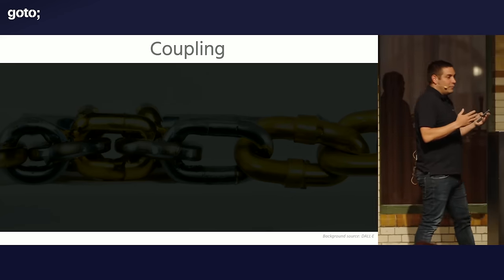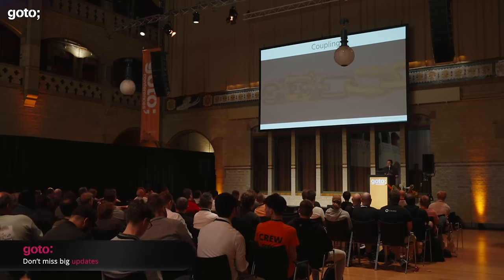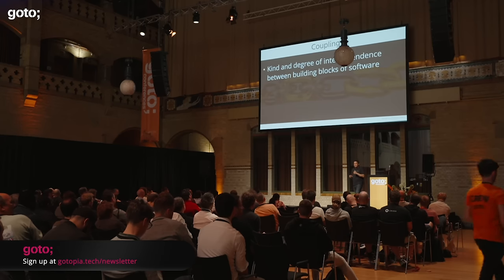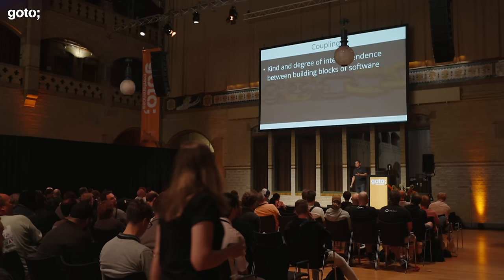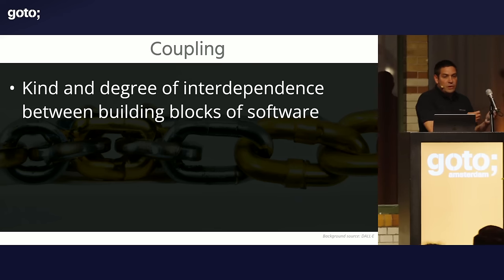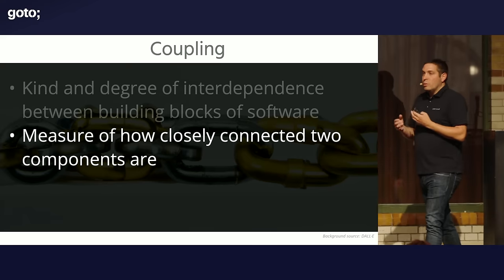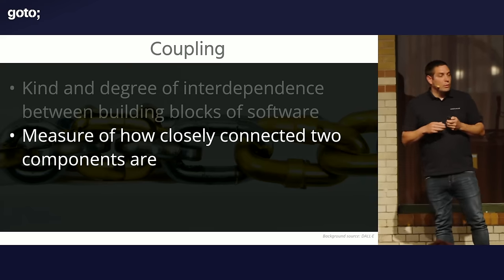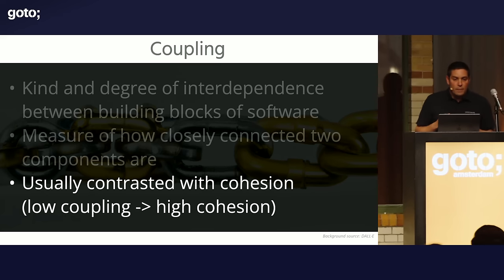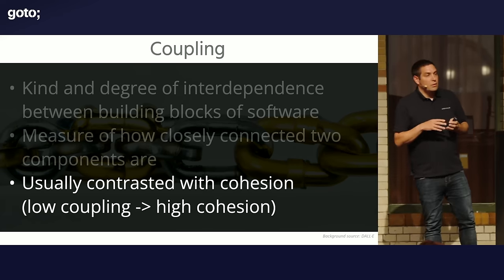Before I can make my points about generic versus specific, we need to look at coupling. Coupling is the degree of interdependence between building blocks of software — whether a class, component, module, service, or project. Typically you have coupling when you change something and something else you don't want to change needs to change as well. It's a measure of how closely connected two components are, and typically you're aiming for low coupling. It's usually contrasted with cohesion — the degree to which elements of a building block belong together. When cohesion is high, you typically also have low coupling.